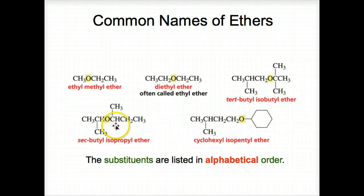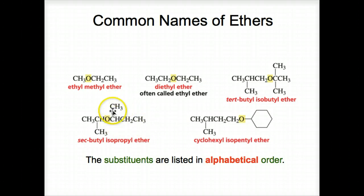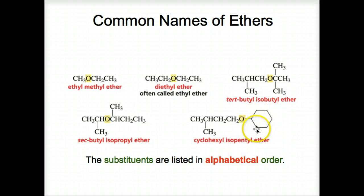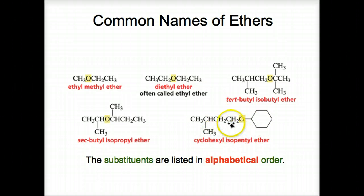Sec-butyl isopropyl ether — here's the isopropyl part, and this is sec-butyl: a four-carbon chain with the methyl group coming off of a secondary carbon, which we call sec-butyl. And then here we have cyclohexyl isopentyl ether — here is the cyclohexyl part, and this is the isopentyl part, a branched five-carbon chain. Substituents are listed in alphabetical order.